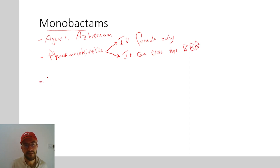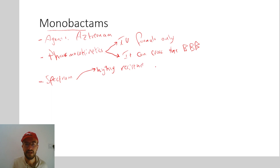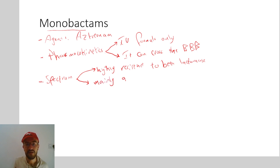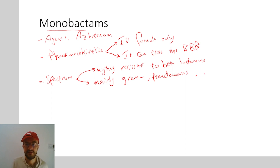Regarding the spectrum of the monobactams, they are highly resistant to the beta-lactamase enzyme. Their spectrum is mainly gram-negatives — they are very effective against gram-negatives and they also work on pseudomonas, but unfortunately they don't affect gram-positives. So there is no action against gram-positives.